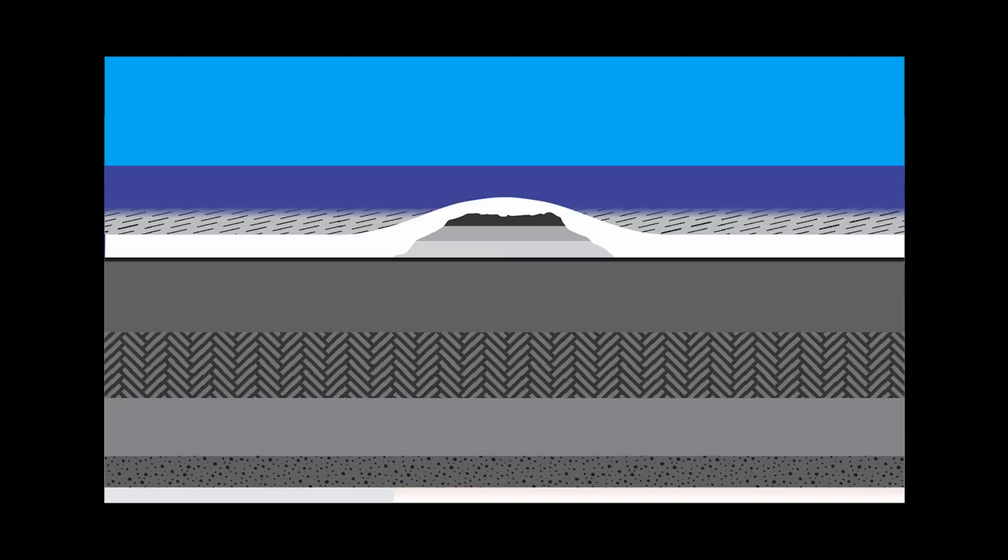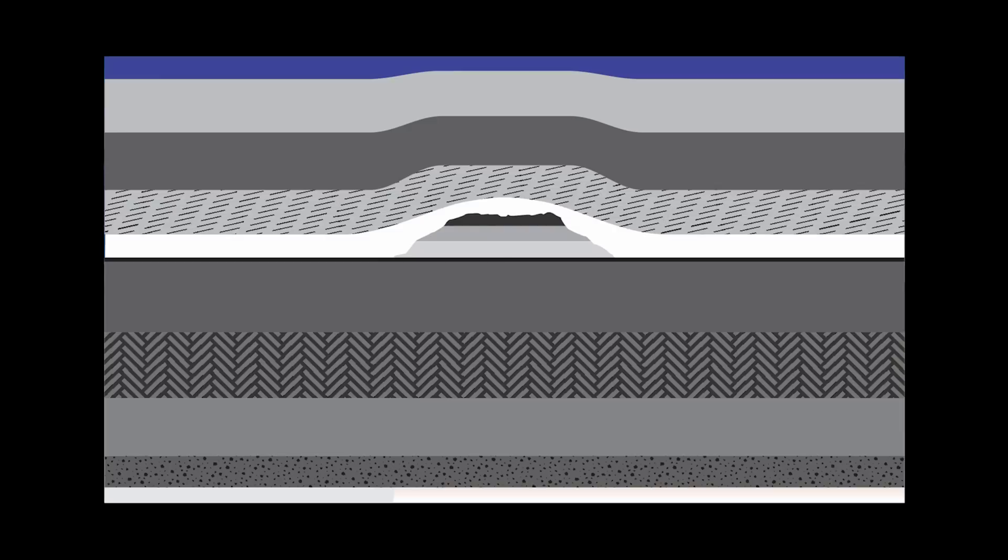Similarly, compaction can occur when a reef is buried under sediments. This can produce both a structural trap within the anticline draped over the reef and a stratigraphical trap within the reef itself.